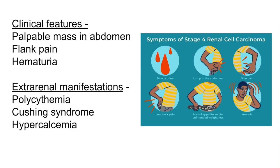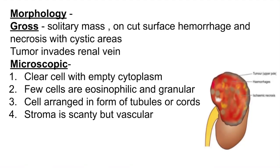Clinical features include a palpable abdominal mass, flank pain due to stretching of the renal capsule, and hematuria. Extra-renal manifestations include paraneoplastic syndromes: excess erythropoietin production causes polycythemia; excessive ACTH production causes Cushing syndrome; and hypercalcemia is also seen.